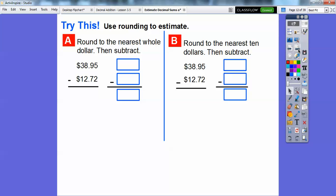Let's use rounding to estimate. On this first part, let's round to the nearest whole dollar, and then we'll subtract. We have $38.95. Let's round this to the nearest whole dollar, that's code word to the nearest ones. We'll round this 8 to a 9 because this 9 is greater than 5.